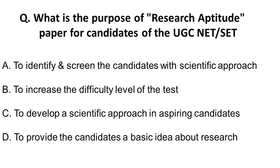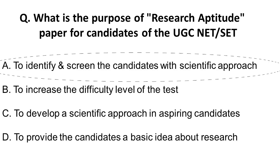The first question is: what is the purpose of the research aptitude section in Paper 1 for UGC NET and state examinations? Option B — to increase the difficulty level — can be eliminated, because if they wanted that, they would have included advanced-level math. Option C — to develop scientific approach in candidates — is also not correct, as that is not the duty of the screening agency. The correct answer is to identify and screen candidates with a scientific approach.